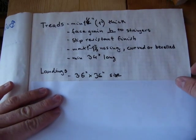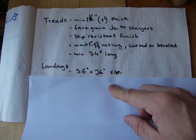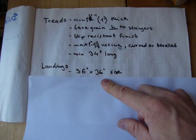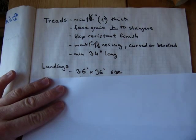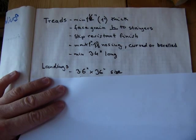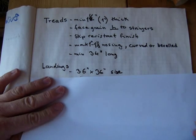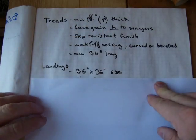The building code deals with landings. The landings may not be built any which way you like. They must be at least, minimum, 36 by 36 inches. So you can stand on it and turn around conveniently and change direction, because landings are typically placed where the flights of stairs change direction.